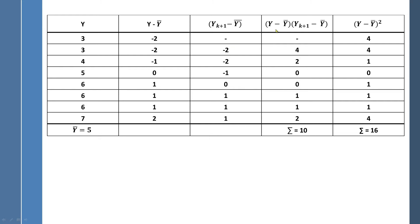For the next column, we take the product of the deviation score and the lagged deviation score, skipping the one with a dash. Negative 2 times negative 2 gives us positive 4; negative 1 times negative 2 gives us positive 2, and so on. This is the product of Y minus the mean of Y times the lagged deviation score of Y minus the mean of Y. We take the sum of that column to use in the formula. We also need the straightforward sum of squares for variable Y: it's Y minus the mean of Y, squared. Negative 2 squared is 4, negative 2 squared is 4, negative 1 squared is 1, and so on. Those sum up to 16.